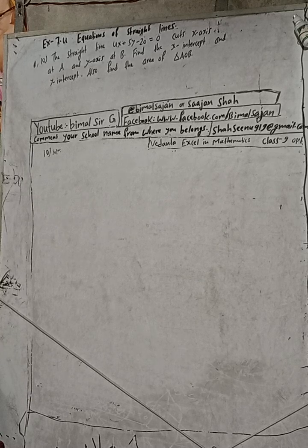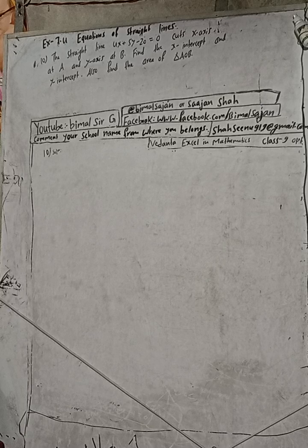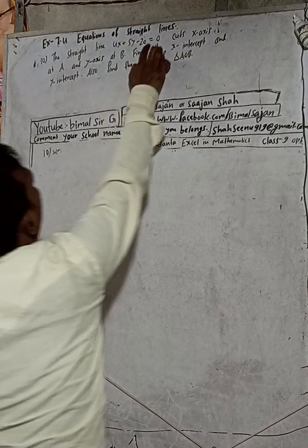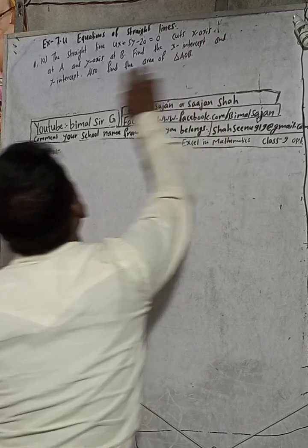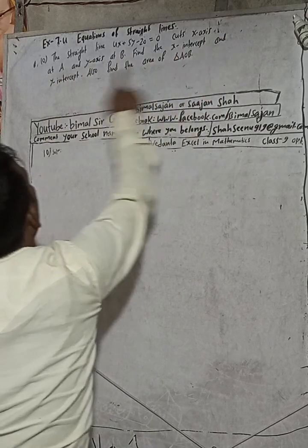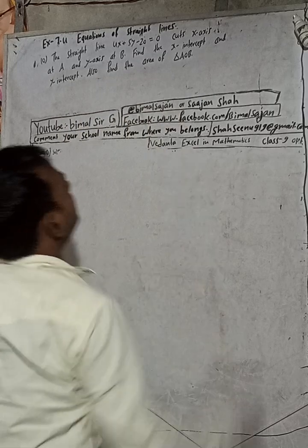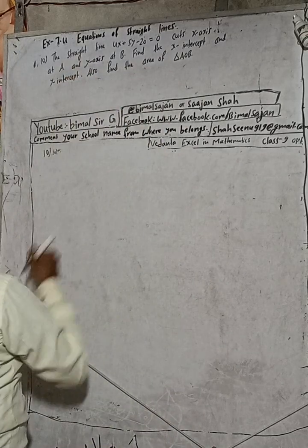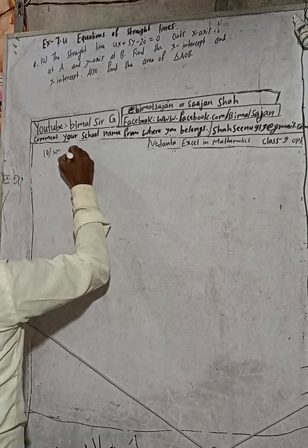This saves my time and this time savings helps me to make more videos for you. So don't skip the videos and watch the videos. The question is here: the straight line 4x plus 5y minus 20 is equal to 0 cuts x-axis at A and y-axis at B. Find the x intercept and y intercept, also find the area of triangle AOB.